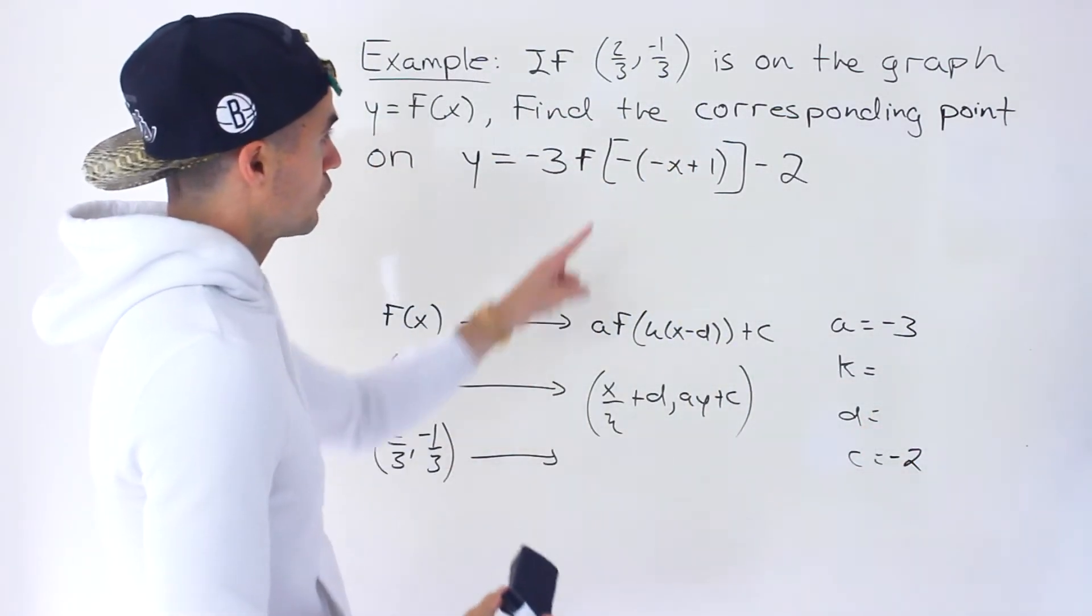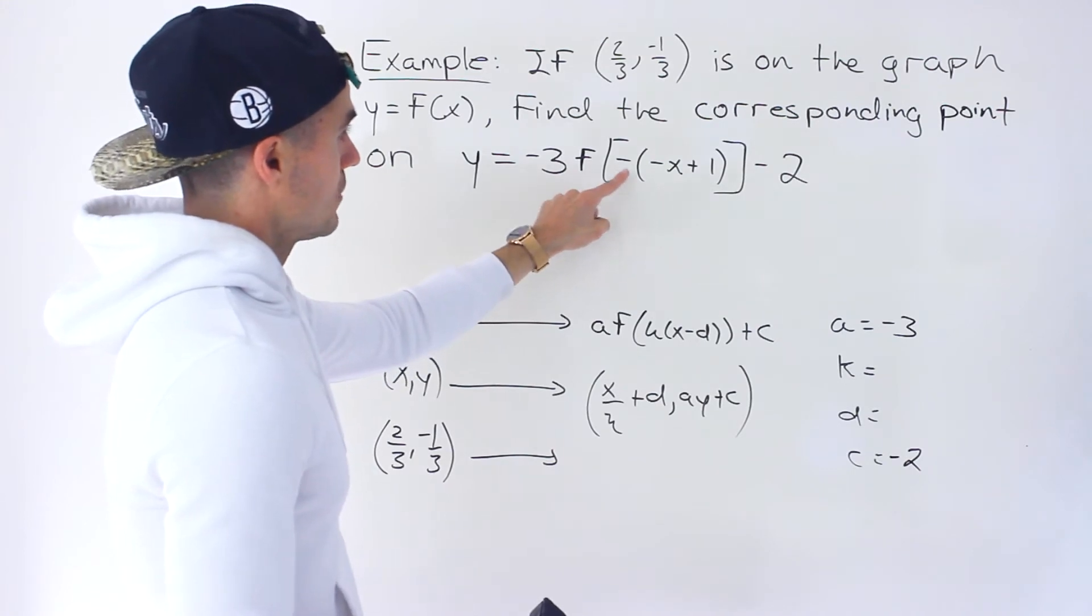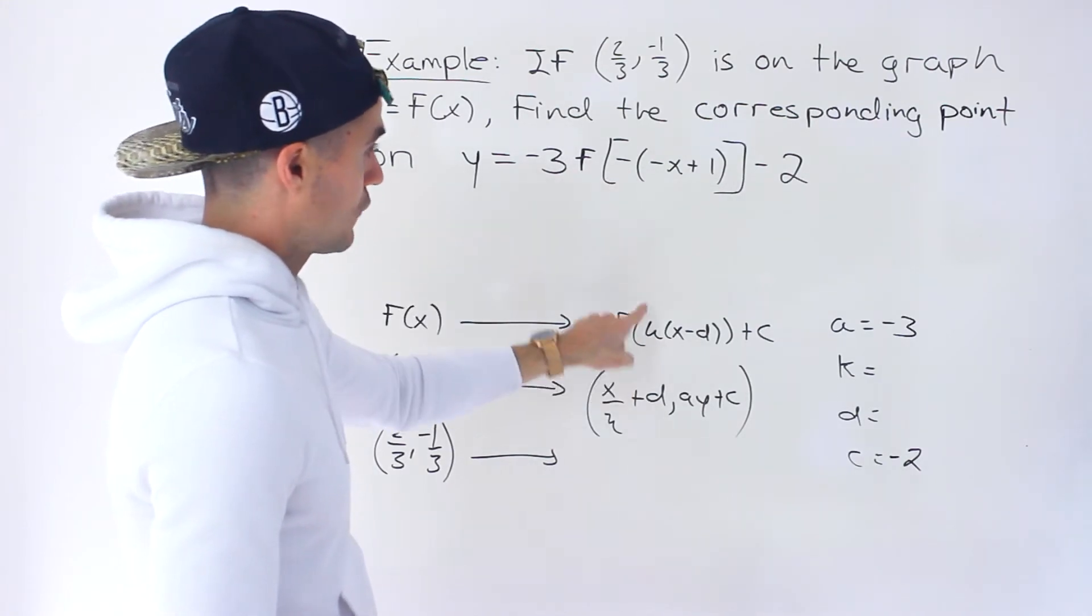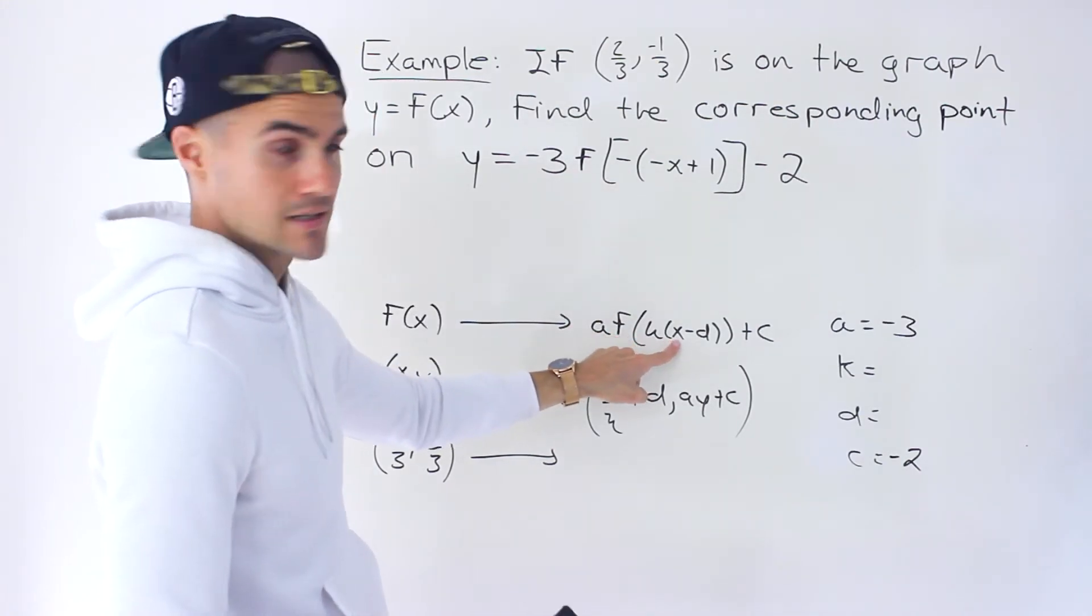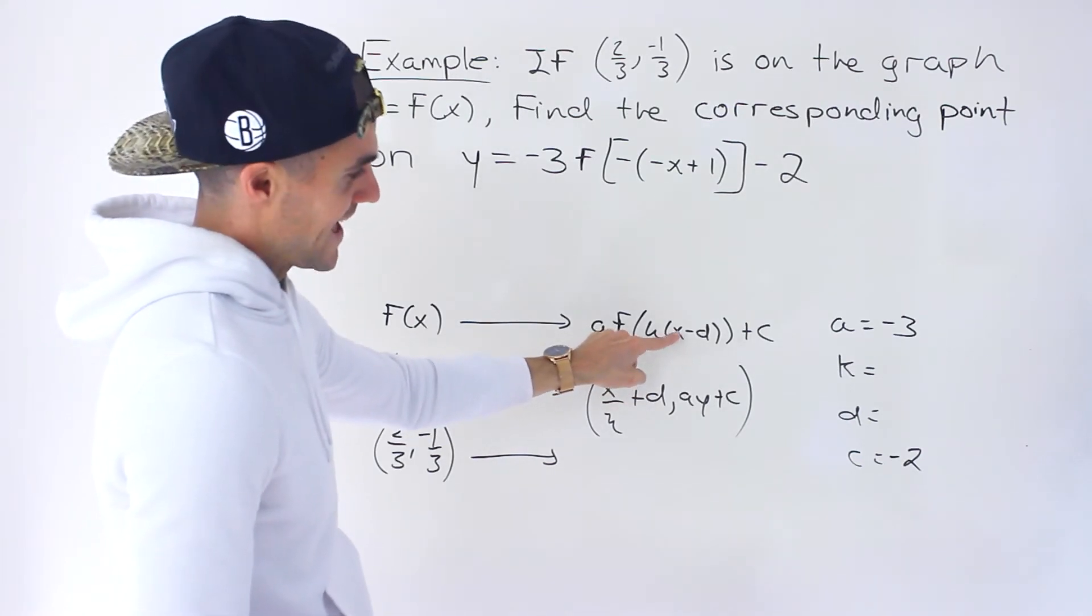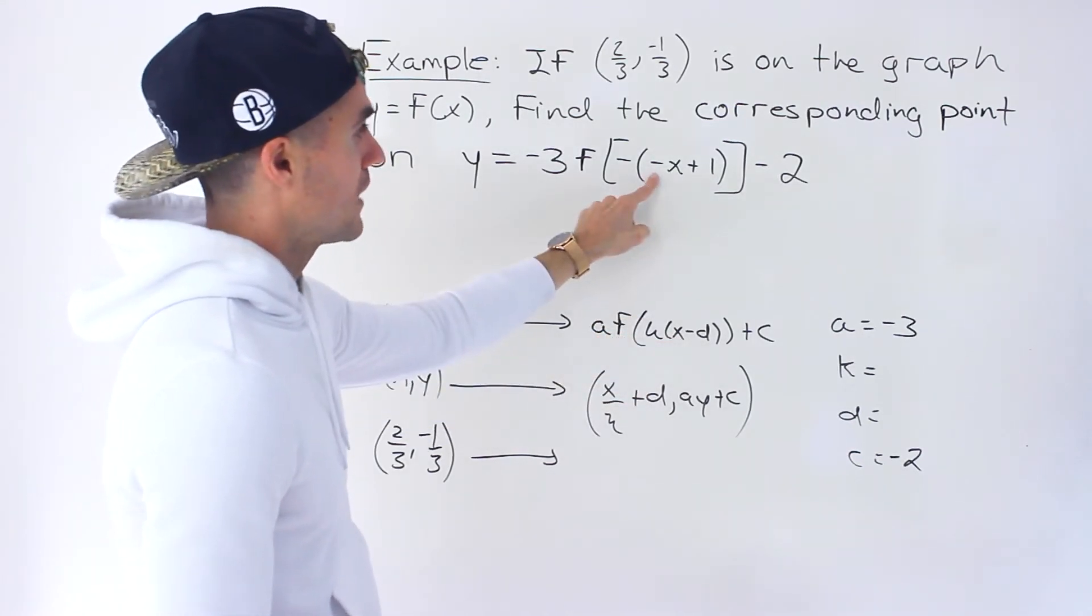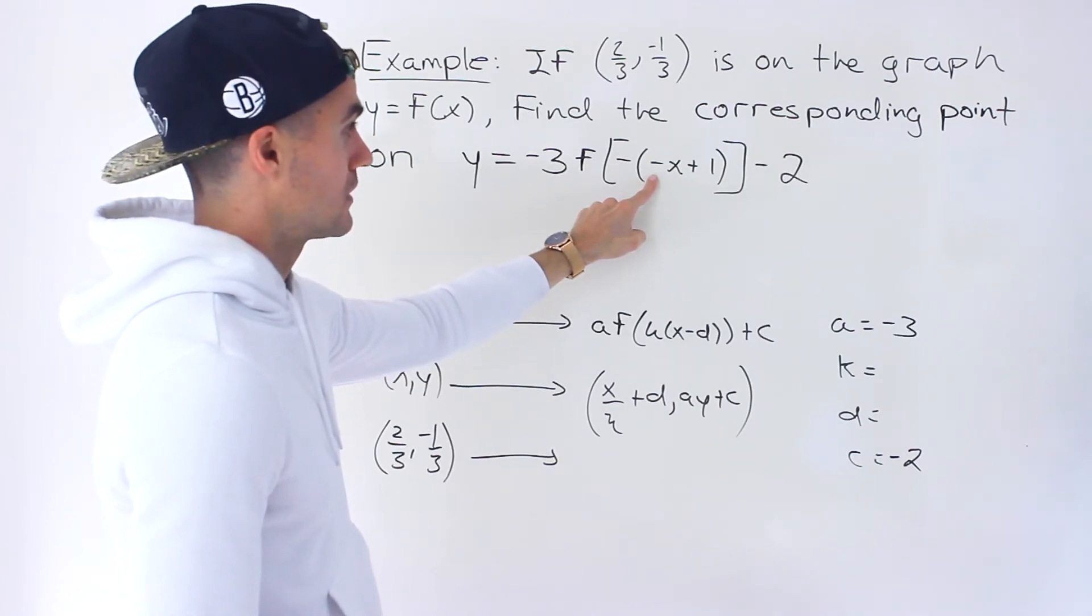But you've got to be careful over here, because notice it's almost in this format, this k bracket x minus d format. The only thing that's different is that this x here is by itself. Over here, we have a negative 1 in front of the x.